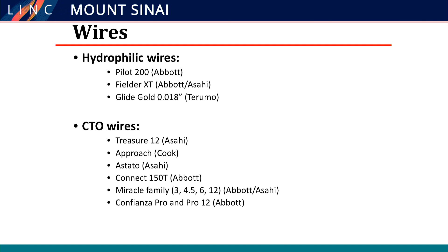Regarding wire choice, honestly, we could have a three-hour talk on wires — gram tip, different hydrophilic jacketed wires, CTO wires, and those things. I'm just giving you what I use. In my opinion, you just need two or three wires of each category, and you can get across most of these lesions. For hydrophilic jacketed wires — and really it should say 'jacketed' because most wires nowadays are hydrophilic — I like the Pilot 200 for below-the-knee tibial vessels, both antegrade and retrograde. I also like the Glide Gold. Those two are my go-to jacketed wires: Pilot 200 (a 014 wire) and the Glide Gold 018.